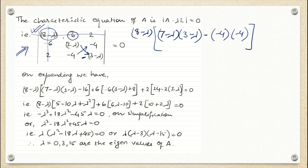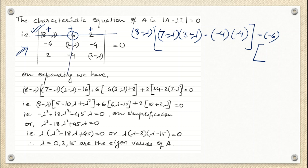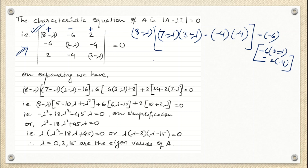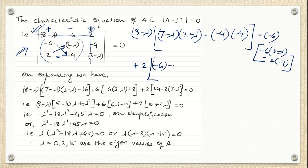Next, consider -6. The first column has a plus sign, the second a minus sign, and the third a plus sign. So it is minus (-6) times [(- 6)(3-λ) minus (2)(-4)]. Then consider 2 with a plus sign: plus 2 times [(-6)(-4) minus (2)(7-λ)]. This all equals 0.